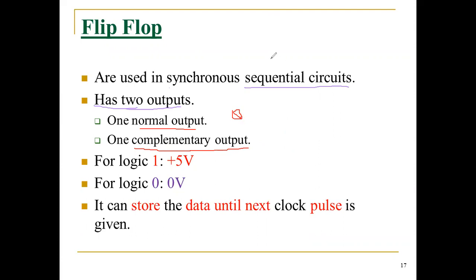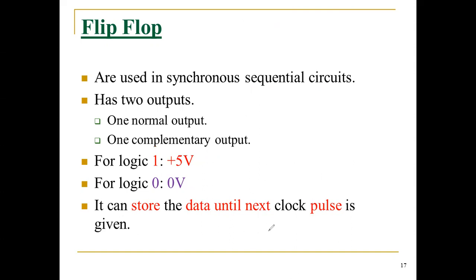Flip-flops have at least one input — some flip-flops have only one input. Logic one is represented as plus five volts and logic zero as zero volts. The flip-flop can store data until the next clock pulse is given — it is a temporary storage device that holds data till the next clock pulse reaches the flip-flop.